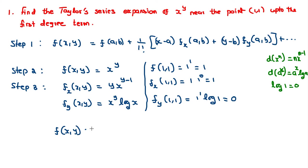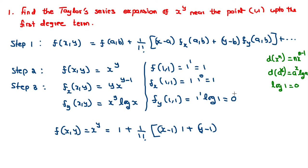Substituting in the formula: x to the power y equals f(a,b) plus (x minus 1) into fx(a,b) plus (y minus 1) into fy(a,b). That is 1 plus (x minus 1) into 1 plus (y minus 1) into 0. The second term simplifies to (x minus 1) and the third term becomes 0. So the Taylor series expansion of x to the power y about the point (1,1) is: x to the power y equals 1 plus (x minus 1) plus etc.